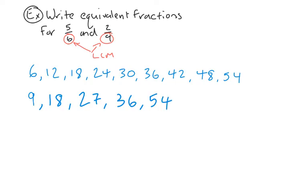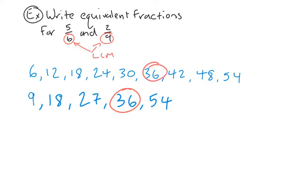Now you're going to notice something interesting — we have a few numbers that are common to both sets. The first common number I can see is 36, and we also have 54. But remember, we're looking for the lowest common multiple, so the lowest common multiple here would not be 54 — it would actually be 36. So let's indicate that: 36 is the lowest common multiple of 6 and 9.